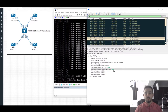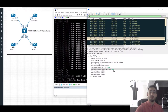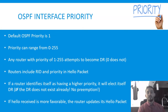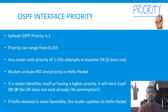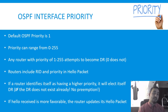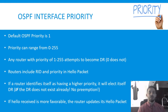Let's hop back into the presentation. The next thing we're going to talk about is OSPF interface priority. OSPF routers have an interface priority — the default is 1, but it can range from 0 to 255. Any router with a priority from 1 to 255 will attempt to become the DR or BDR for the segment. If the priority is zero, the router does not participate in the election process and will never become the DR or BDR.